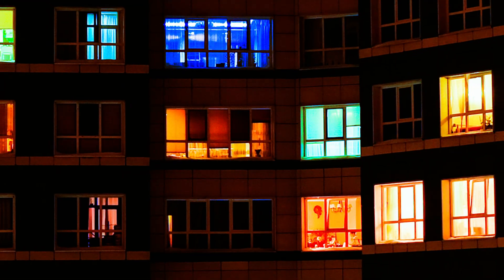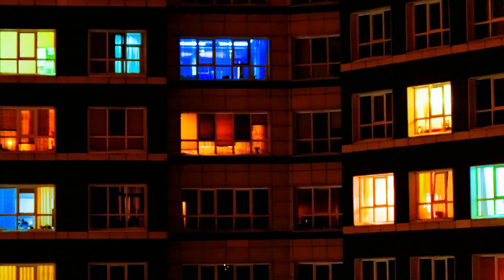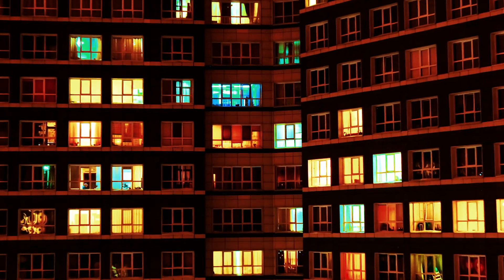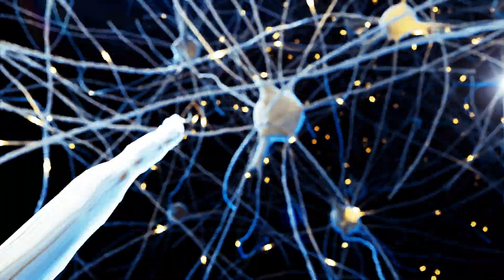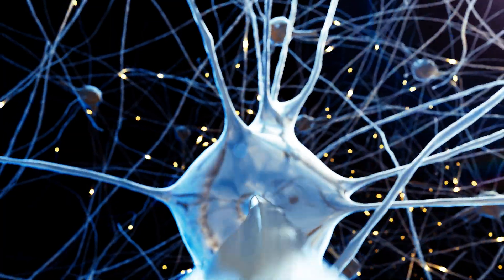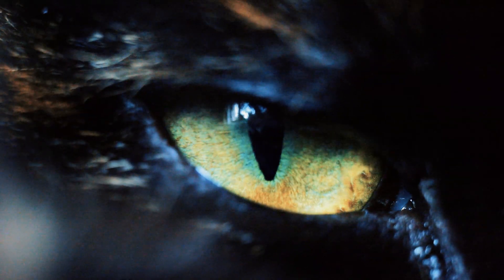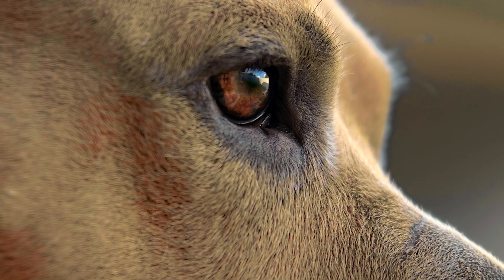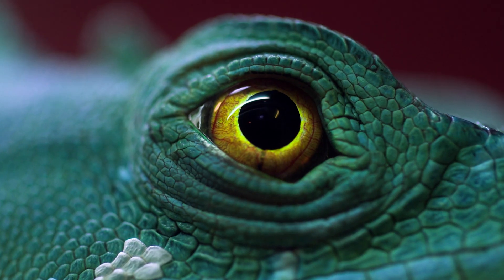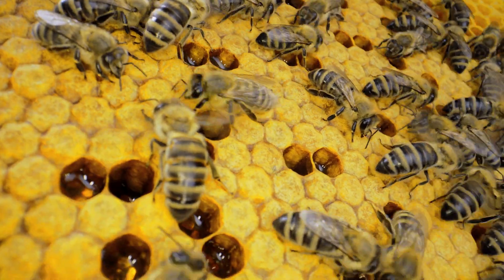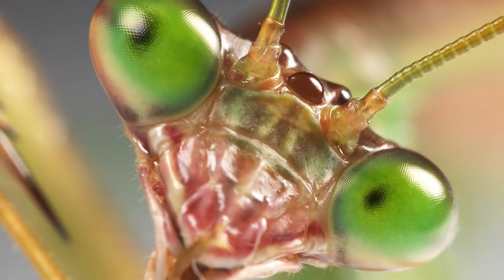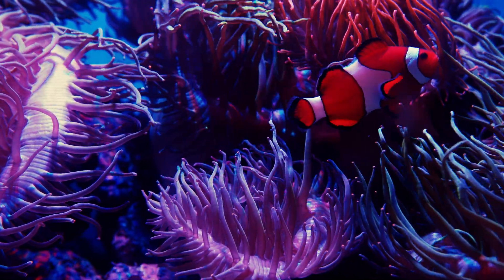La luce è il mezzo che connette l'occhio umano al mondo. Gli occhi sono lo strumento che misura la luce. Il cervello processa le informazioni visive per creare una percezione coerente e dettagliata dell'ambiente. Diverse forme di vita possiedono differenti sistemi sensoriali e neurologici, spesso indipendenti dalla luce visibile, il che le porta a percepire il mondo in modi completamente diversi.